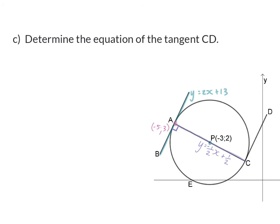Question c: Determine the equation of the tangent CD. Again we're going to use the theorem that says the tangent is perpendicular to the radius and we can immediately write down that the gradient of CD will be the opposite sign and then the reciprocal of the gradient of the diameter.